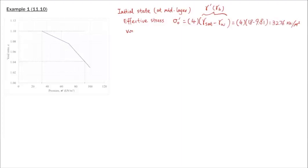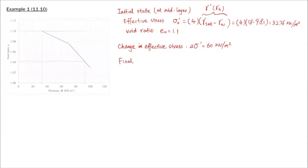The void ratio is given in the problem statement, so we know the initial void ratio e-naught is 1.1. For the final state, we know the change in effective stress delta-sigma-prime due to the surcharge on top is 60 kN/m². The final effective stress sigma-f-prime equals sigma-naught-prime plus delta-sigma-prime, which gives 92.76 kN/m² — that's the final effective stress after the surcharge is placed on top.